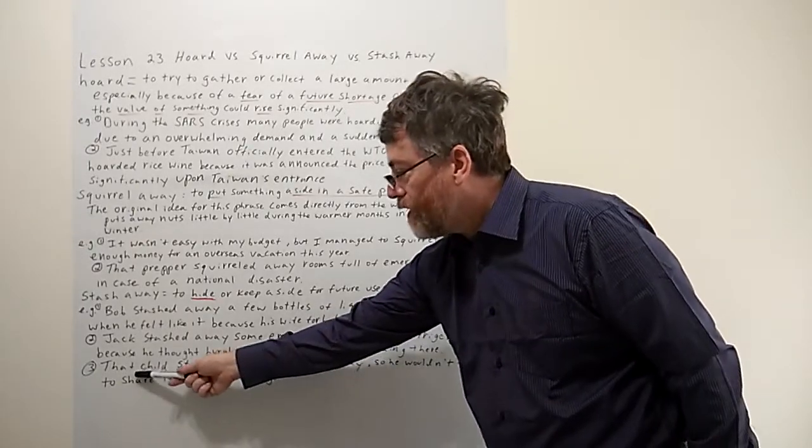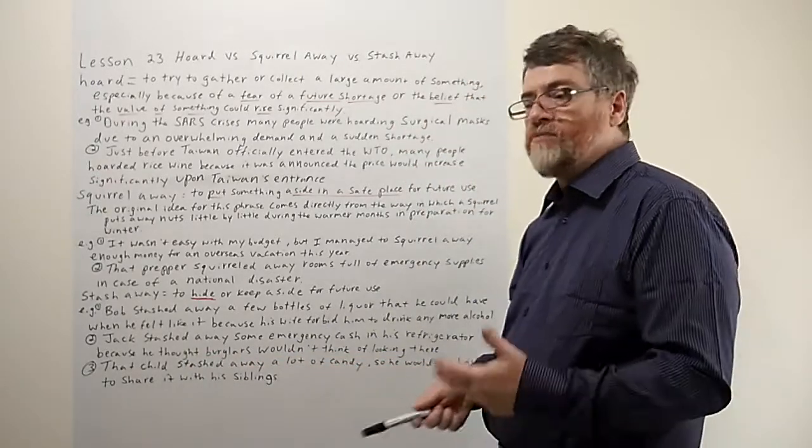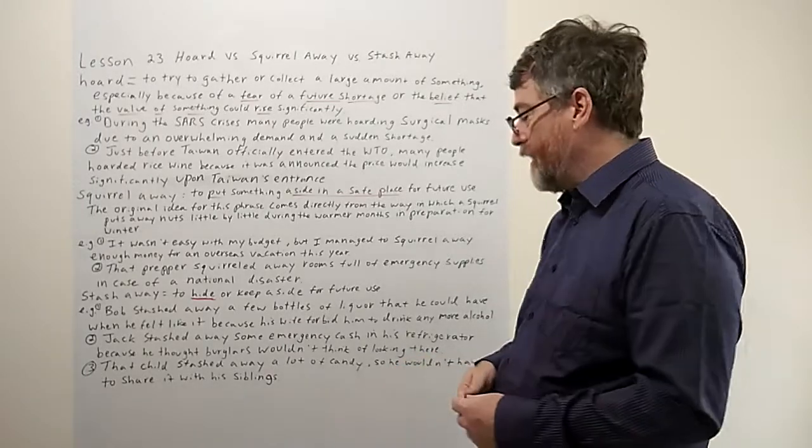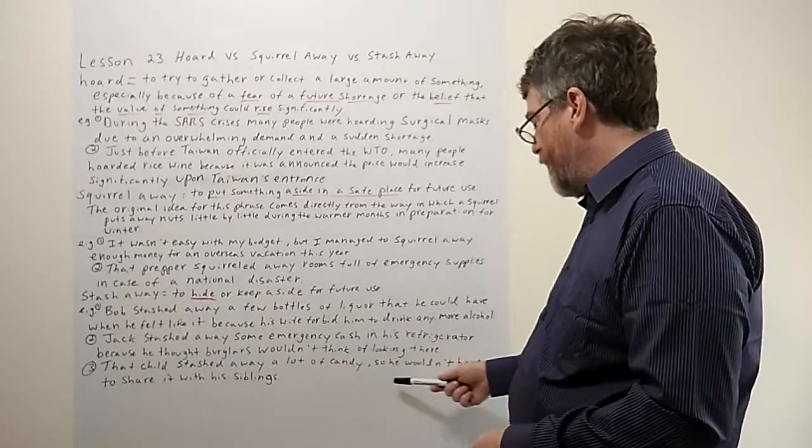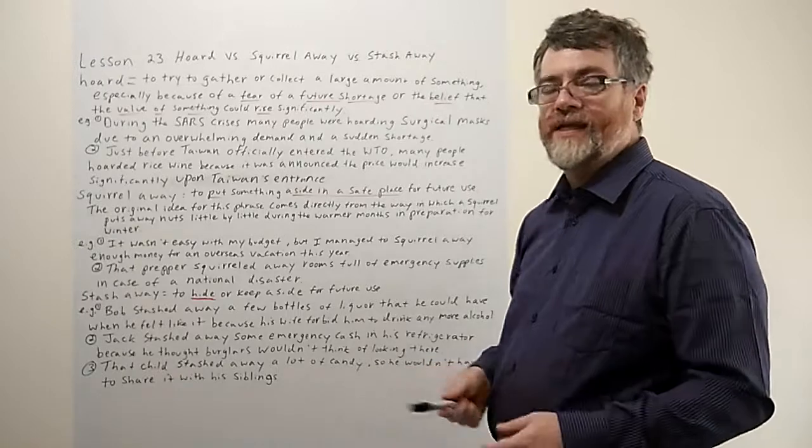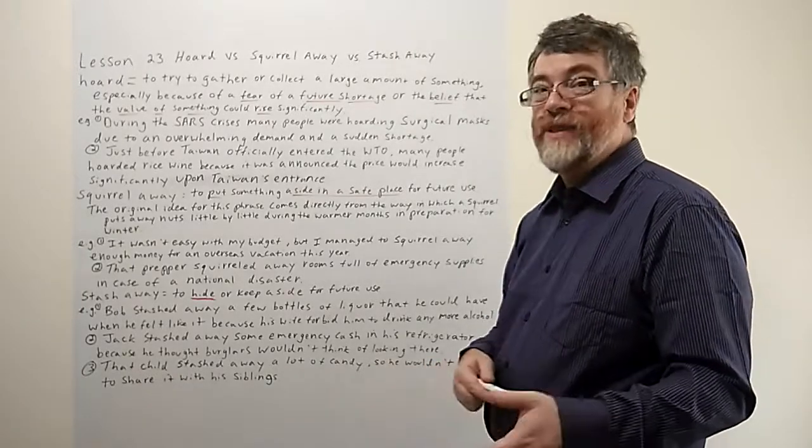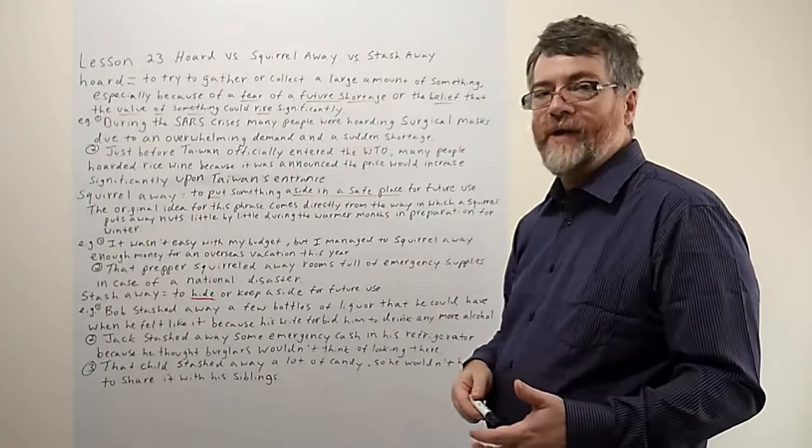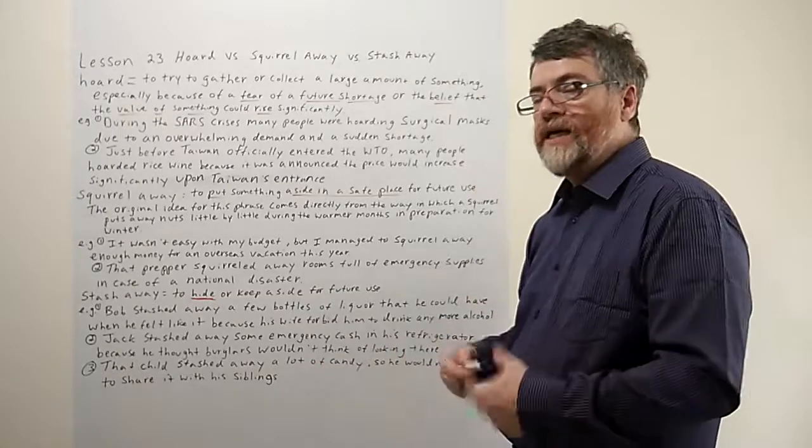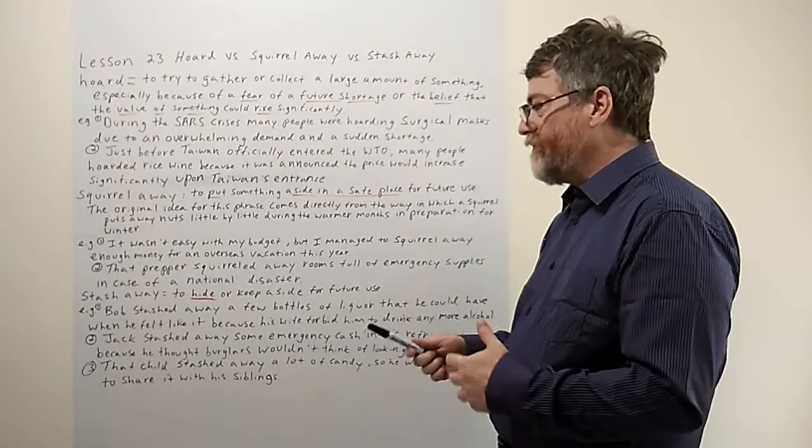Let's look at the last example down here. That child stashed away a lot of candy. Yeah, so it's not always to do with money or anything of great value. Sometimes it's just value to the person who's putting it aside. Stashed away a lot of candy so he wouldn't have to share it with his siblings. We know of cases like this where sometimes kids will put candy in their drawer so that when they want it later, but they don't tell anybody. And this way, just like I said, they don't have to share it with their brothers or sisters. They can keep it all to themselves.